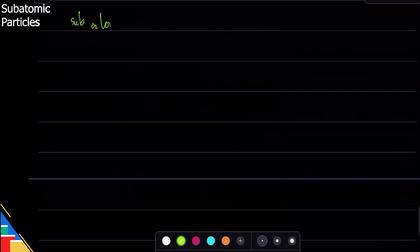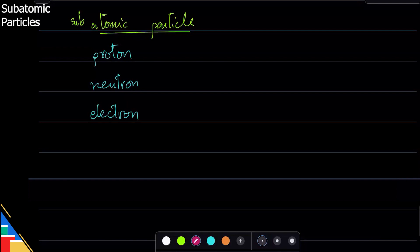So we have three subatomic particles. The proton, neutron, and electron are all in different spaces. The proton and neutron are in the nucleus, and the electron is moving around in the space. Now if I change a proton, then what do I change about the atom?